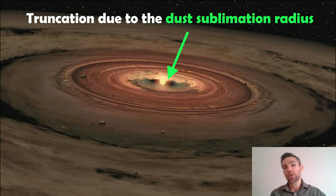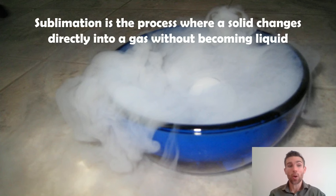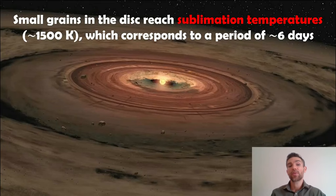The next one is due to a truncation due to the dust sublimation radius. Very close to the star it's going to be quite hot and this will be a distance where the actual dust in the protoplanetary disk actually sublimates. That's the process where a solid changes directly into a gas without becoming a liquid. Those dust particles get so hot they actually sublimate and become gas, and at that point you don't have a solid disk that the planet can then interact with.